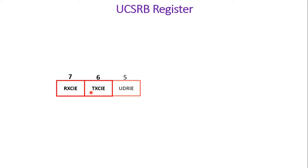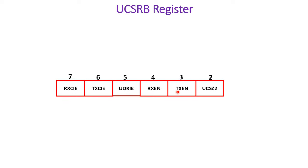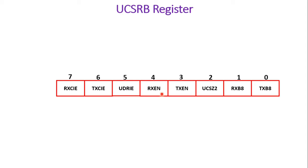In UCSRB register, we have RXCI, TXCI, UDRI, RX enable, TX enable, UCSZ2, RXB8, and TXB8. In this UCSRB register, I am going to use the fourth bit, which is called RX enable. We have to make this bit 1, otherwise serial reception will not happen.